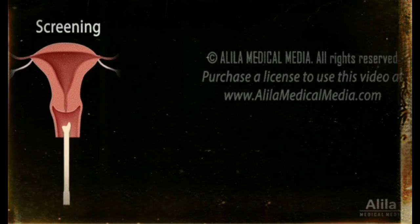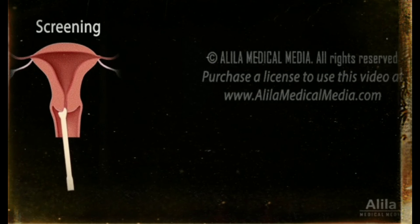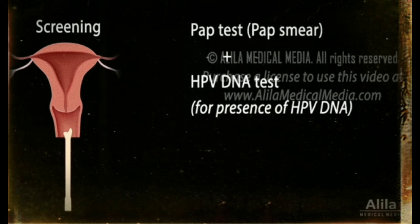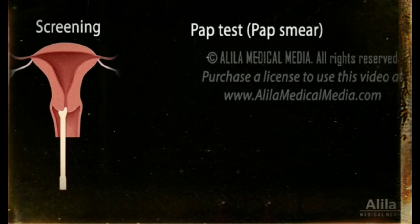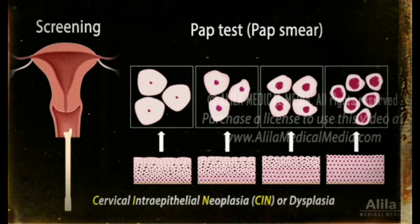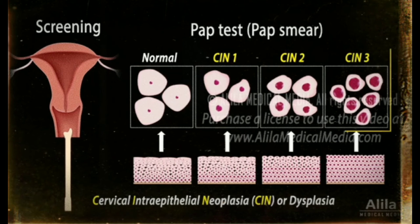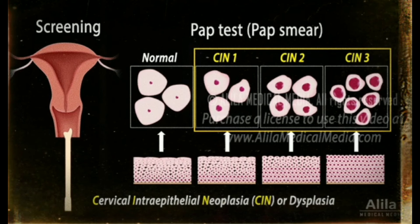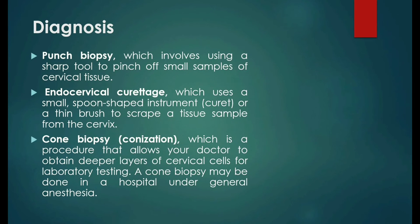Diagnostic and Laboratory Procedure. Early detection is the key to prevent cervical cancer. Cervical cancer screening may include a PAP test alone or in combination with HPV DNA testing. In a PAP test, cells are scraped from the cervix and examined for pre-cancer changes known as cervical intraepithelial neoplasia or cervical dysplasia. These morphological changes can range from mild to severe. If the result is abnormal, the test is repeated after 6 months or 1 year to monitor the condition. If cervical cancer is suspected, doctors will likely start with a thorough examination of the cervix.